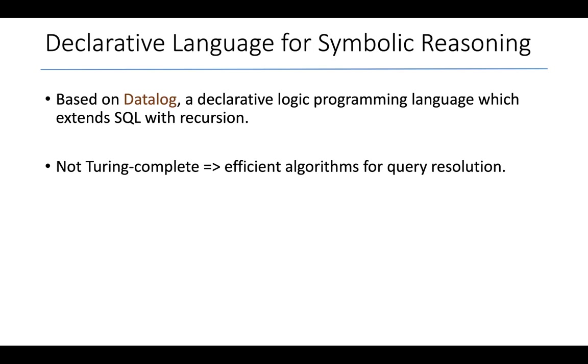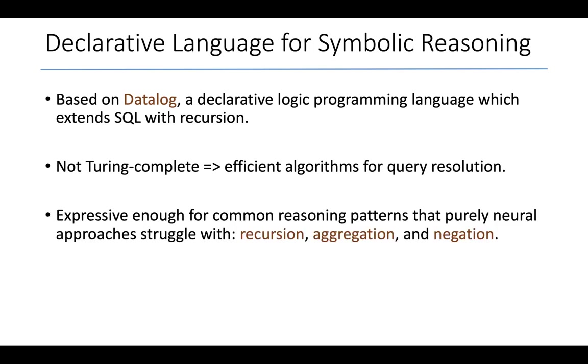And if we have efficient algorithms for evaluating the logic component on different inputs, then that speeds up both inference and learning of the parameters of the neural components. So hopefully I've convinced you that in return for giving up some expressiveness, we get a lot of benefit in terms of speeding up inference and learning. This is what crucially distinguishes Scallop from works like Deep ProbLog.